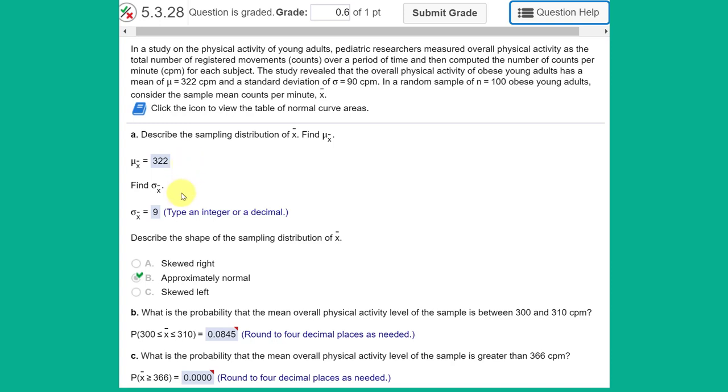The standard deviation sigma sub X bar of the sampling distribution though is not equal to the sigma 90 of the population. Remember the formula that you need to use is the sigma sub X bar is equal to sigma divided by the square root of the sample size. In this case our sample size n is 100, square root of that is 10, 10 divided into 90 gives us 9.